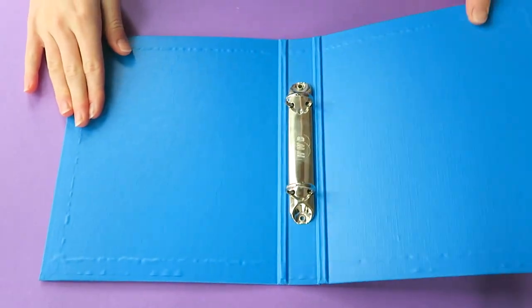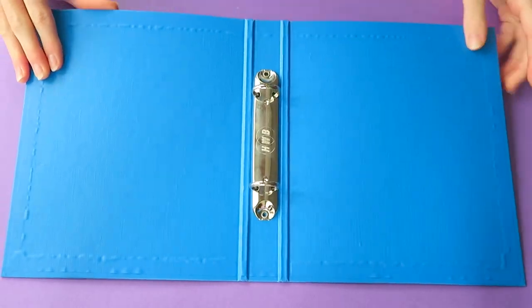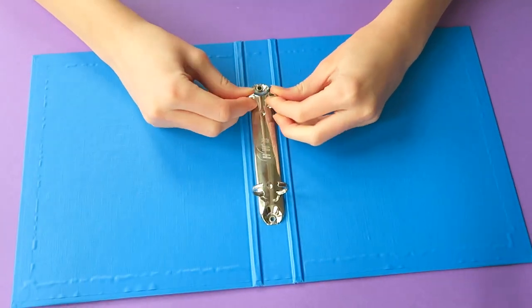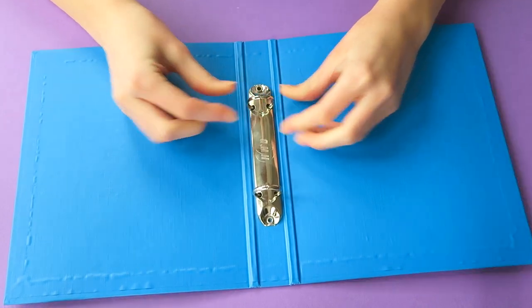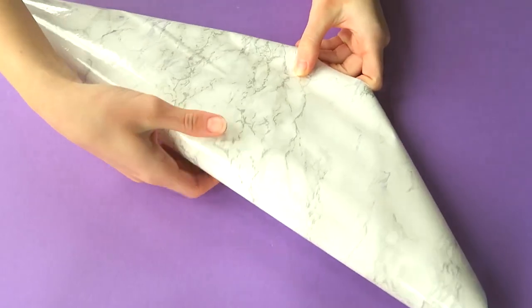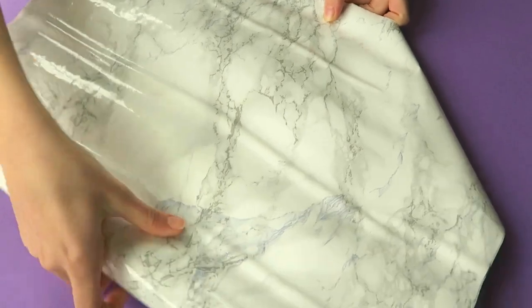So the first thing I'm going to show you guys how to make is obviously the planner itself. So to make my planner, I used a binder. And the one I'm using here is a little bit tinier than the regular binders. I think it's like A5 size.